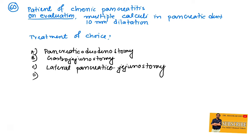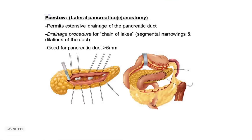Question 60: a patient of chronic pancreatitis with multiple calculi in the pancreatic duct with 10-millimeter dilatation of the pancreatic duct. What is the treatment of choice? It is lateral pancreatic jejunostomy, also known as Puestow procedure. See, this shows multiple stones in the pancreatic duct, and here is the jejunum and pancreas. One lateral pancreatic jejunostomy operation has been done for drainage. This chain of lakes appearance is also important. This appearance is found in chronic pancreatitis with multiple stones in the pancreatic duct, segmental narrowing and dilatation of the duct when the duct is more than 6 millimeters.